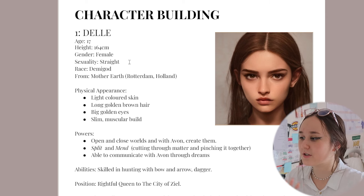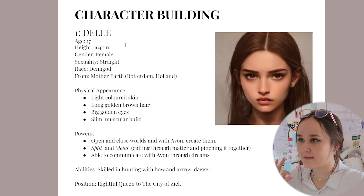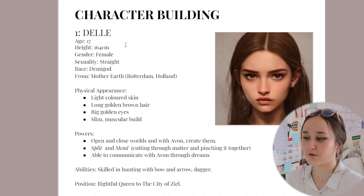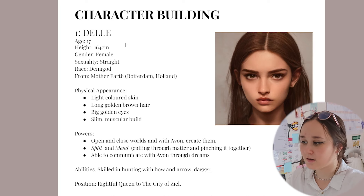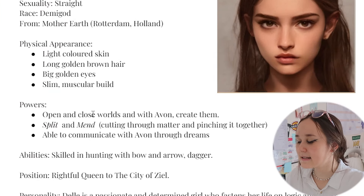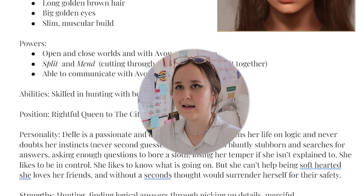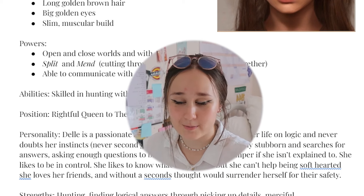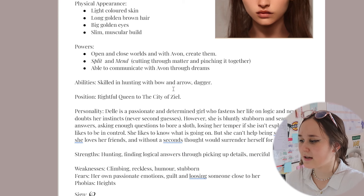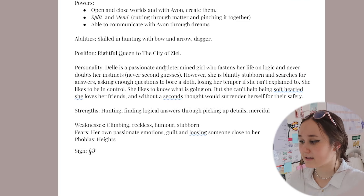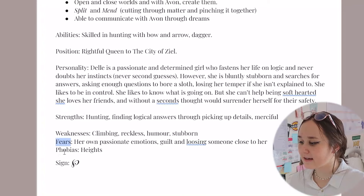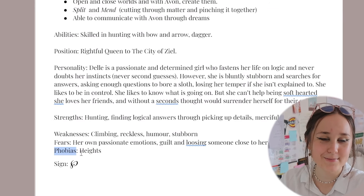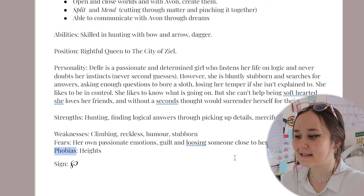Firstly, I just put her name, which is Del. Down below, I have the key attributes that make her a human, basically — that includes height, gender, race, stuff like that. Then I have physical appearance, powers, and abilities. These are two different things. Then we have position, which is kind of like social class, personality, strengths, and weaknesses. Down below weaknesses, I actually have fears and phobias, which are really important because they are a bit distinguishable.